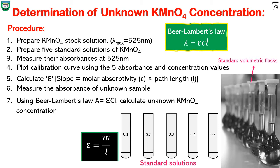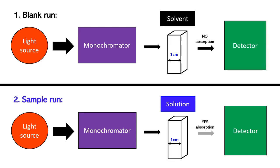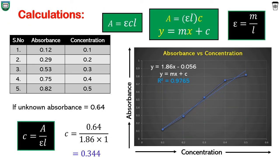Before jumping into the experiment, first take a clean cuvette, fill it with DI water, and run the experiment at 525 nanometers. This is called a blank run. A blank run is when light passes through only the solvent in the cuvette. It is important to record a blank to make sure no light is absorbed by the solvent and the cuvette. Blank spectra are used to subtract background noise from the sample spectra and are recorded once for an entire experiment. It's good to record a blank every 6 hours.